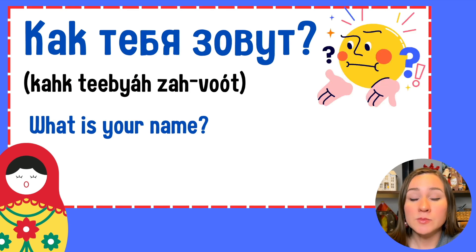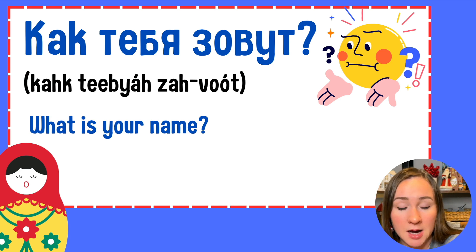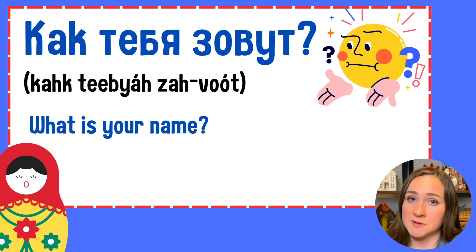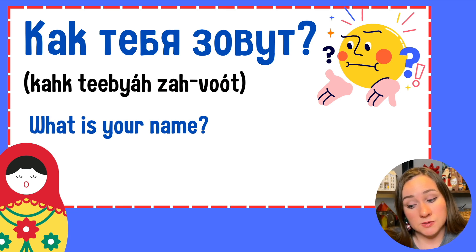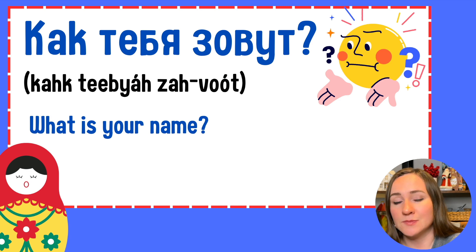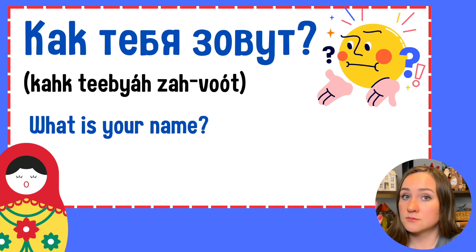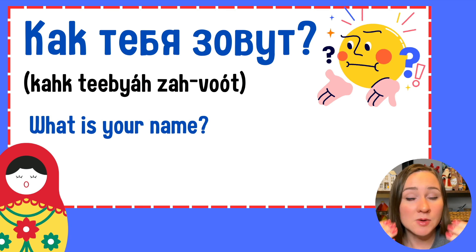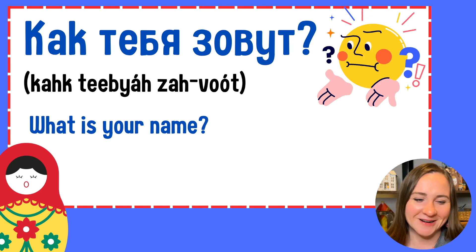The formal one we use with older people or people in some kind of hierarchy higher than us, for example our boss. ТИБЯ is informal — for people of the same age, for friends, relatives, or when you talk to a smaller kid. КАК ТИБЯ ЗОВУТ? Fast: КАК ТИБЯ ЗОВУТ? ХАРОШО.